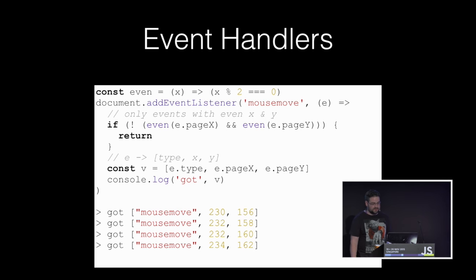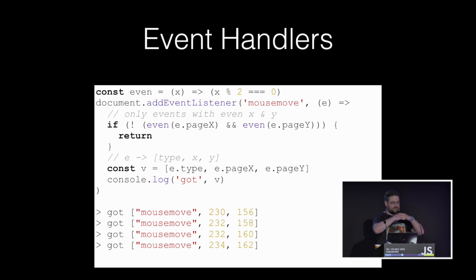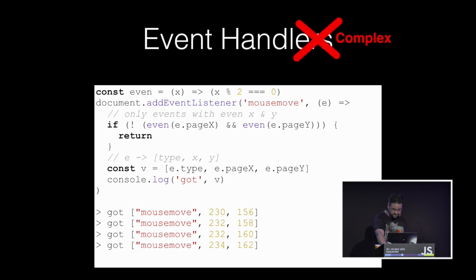In web browsers, we pass callbacks to event handlers to do something in relation to the mouse moving or someone clicking a button. Passing callbacks to event handlers complects the producer and the consumer of events — the producer is the document firing the mouse move event and the consumer is the callback. There's a massive web of direct relationships between things that produce events and the listeners, creating fragmented logic that is difficult to reason about. It also complects the asynchronous nature of the event source with the consumer logic, so this is complex.